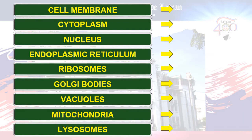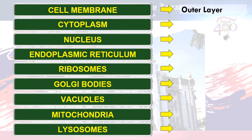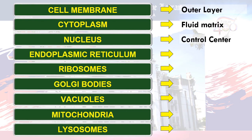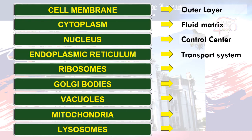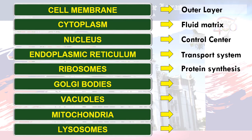Let's now move on to the keywords of the different organelles. For cell membrane: outer layer. Cytoplasm: fluid matrix. Nucleus: control center. Endoplasmic reticulum: transport system. Ribosomes: protein synthesis. Golgi bodies: packaging center.